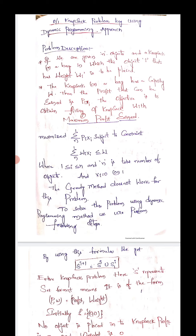We already discussed the greedy method. What is the difference between greedy method and dynamic programming? In a knapsack bag using the greedy method, we can place objects completely or partially — that is, fractional placement is allowed. Coming to dynamic programming, you cannot place a partial fraction of an object; only complete objects are placed.